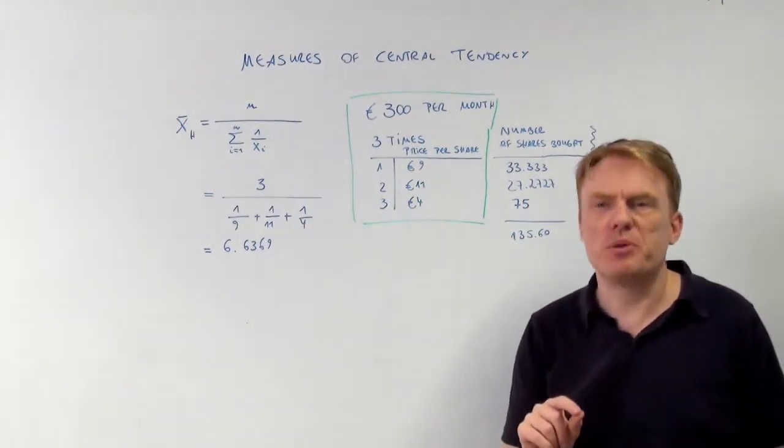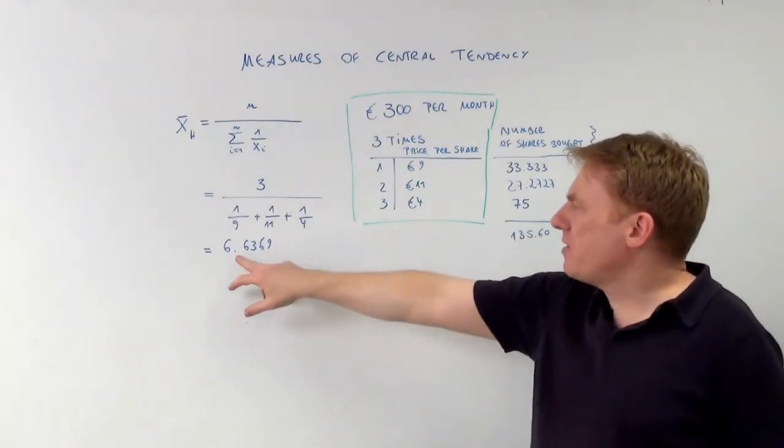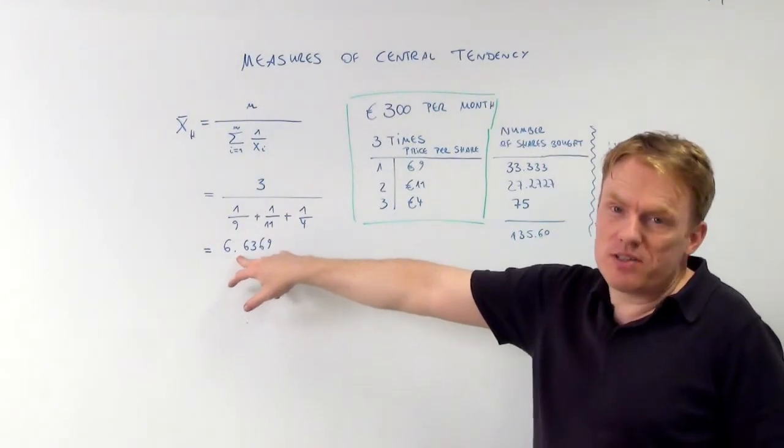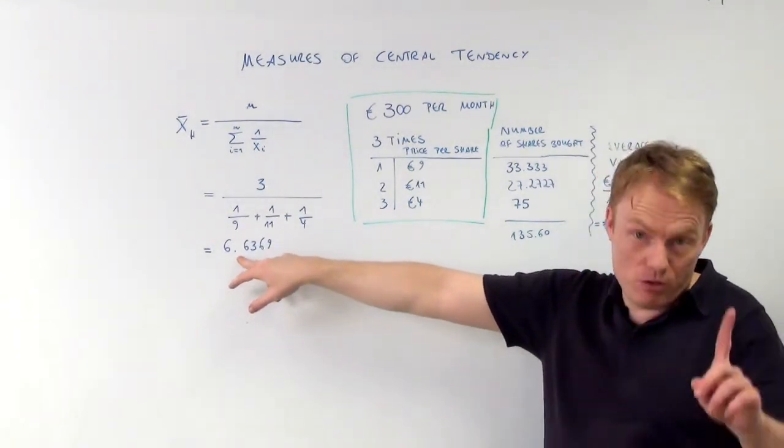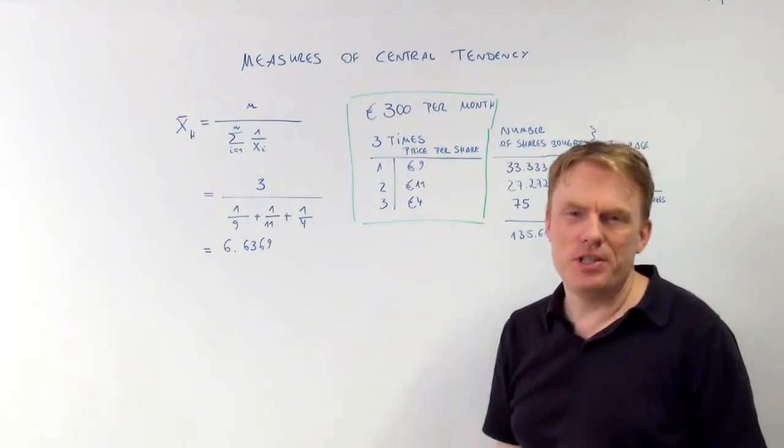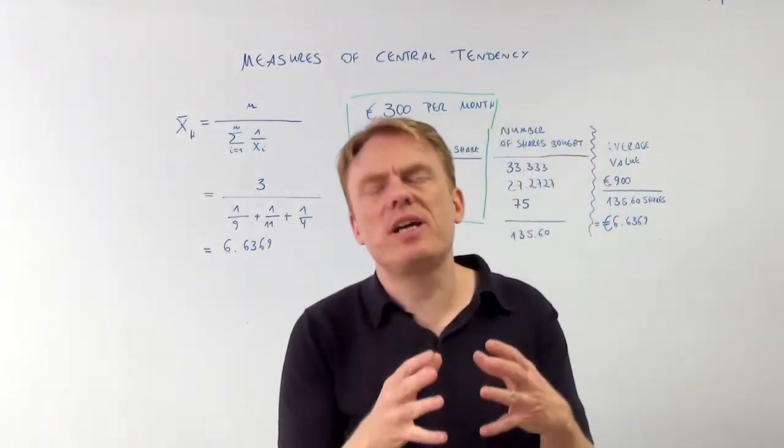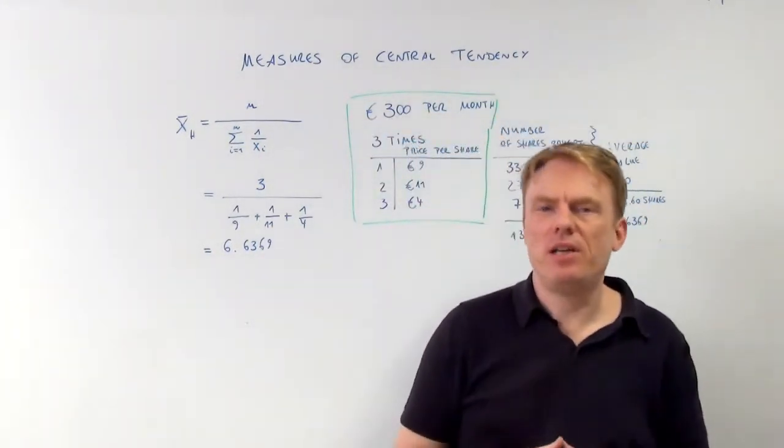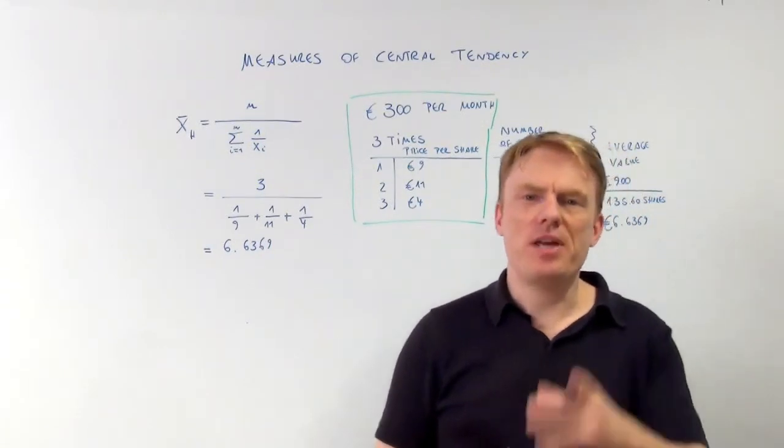Because 4 was the last price here. This gives us, no wonder, 6 euros and 64 euro cents. So that's the second way of calculating the harmonic mean. Thank you for watching.